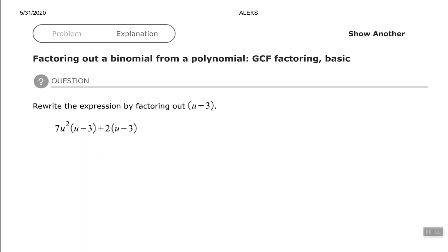With this one, it says to rewrite the expression by factoring out u minus 3. We have 7u squared times u minus 3 plus 2 times u minus 3. The common binomial for those two terms is u minus 3.